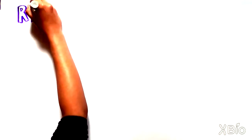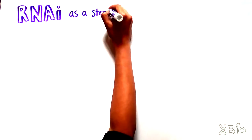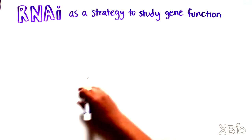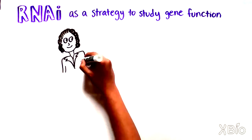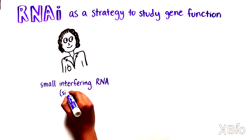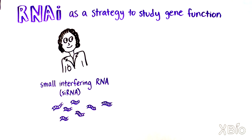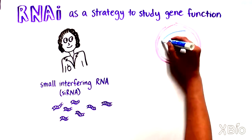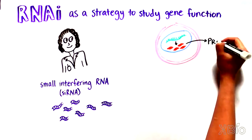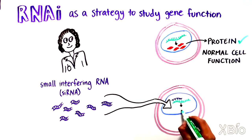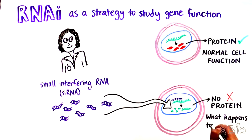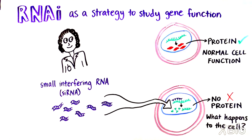Today, RNAi is also used as a strategy to remove the function of a specific gene and examine how that impacts a cell. For example, scientists can use small interfering RNAs or siRNAs, a type of RNAi technology, to pair with and degrade a natural RNA in the cell. Doing so allows researchers to identify the role of a specific protein by studying the cellular outcomes in its absence.